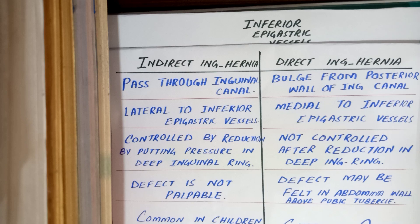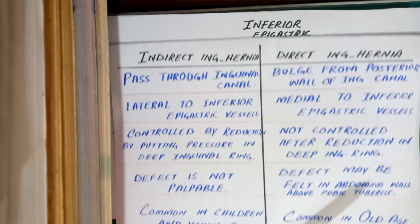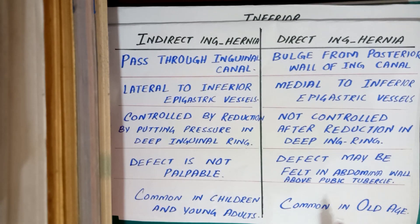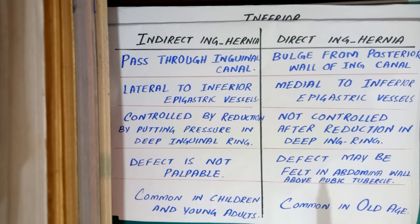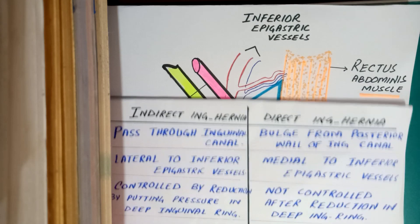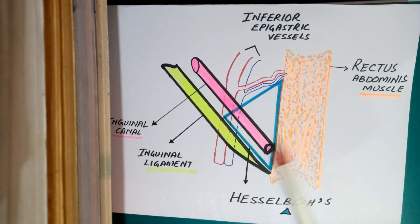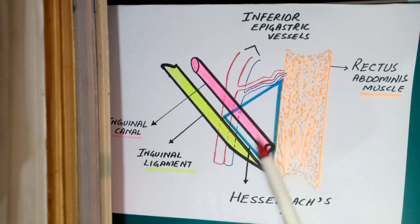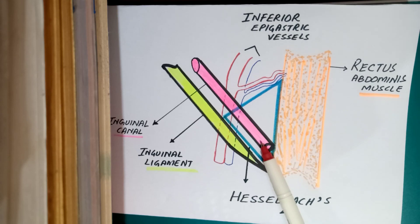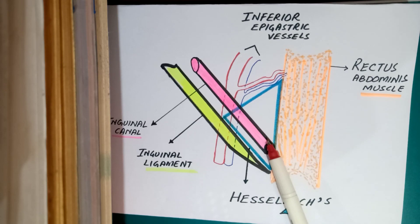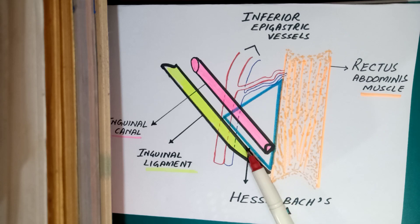The final difference is that indirect inguinal hernia is more common in children and young adults, while direct inguinal hernia is more common in old age. I hope you all understand. Remember, this diagram is very important — if you learn this diagram, it will be very easy to differentiate between direct and indirect inguinal hernia. Thank you for watching.